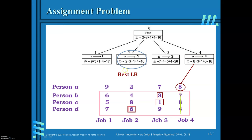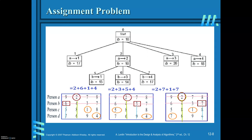Fixing person A with job 2, only 3 jobs remain for person B: jobs 1, 3, and 4. When person B is assigned with job 1, the cost is 6; striking out that column, the third row minimum is 1 and fourth row minimum is 4, giving a lower bound of 13. When person B is assigned with job 3, the cost is 3, with the third row minimum being 5 and fourth row minimum being 5.